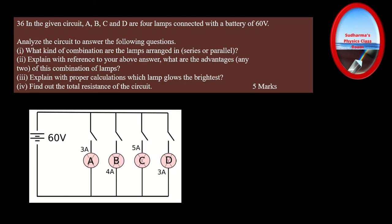Question 36: in the circuit, four lamps A, B, C, and D are connected with a battery of 60 V. Analyze the circuit. First: what kind of combination are the lamps in? Looking at the diagram — from the positive terminal of the battery, one connection goes to each lamp through the switch, and from the negative terminal another connection goes to each lamp. This is a parallel connection. So the first answer is: parallel. One mark directly.